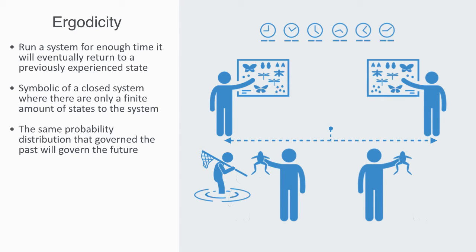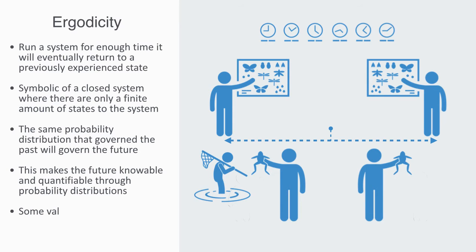The same probability distribution that governed the past will govern the future. This means that a sample from the past is equivalent to a sample from the future. This makes the future knowable and quantifiable through probability distributions. Point to take away is that in order to create closed form models, we have to be able to come up with some value for the future states of the system, and ergodicity is how we do that. Ergodicity presents us with a certain interpretation to uncertainty. Because we can place a value upon it, it is really what we call risk.